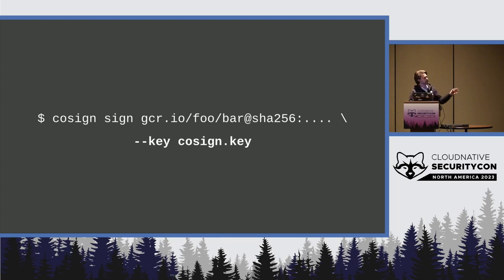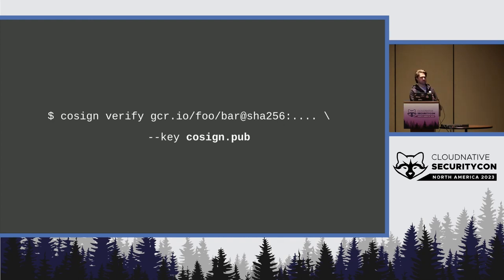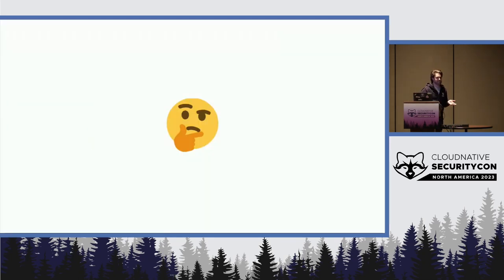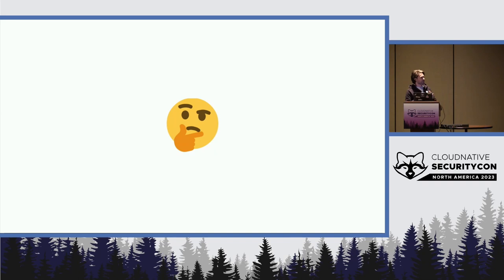Signing with a key pair always looks like this: point to the image and pass in the private key to sign with. When verifying, pass in the public key. You can use Kubernetes admission control and stick the public key in a CRD. This checks that container contents haven't been tampered with and that it was signed by the private key. It doesn't look that bad really — just handle the private key where you sign and take the public key where you verify. It's not bad when it's one key. One key is actually the temptation that leads you down the path of despair.